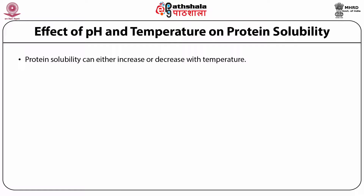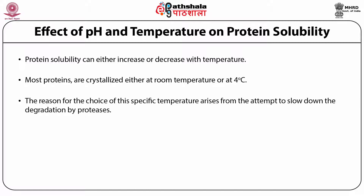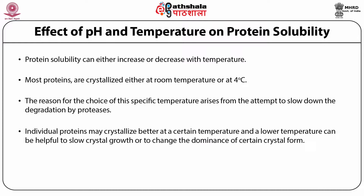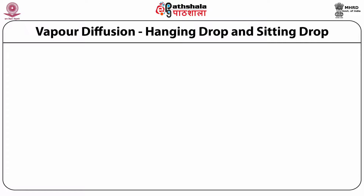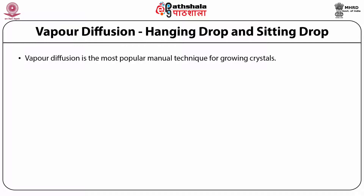The protein solubility can either increase or decrease with temperature. Most proteins are crystallized either at room temperature or at 4 degrees centigrade. The reason for this specific temperature choice arises from the attempt to slow down degradation by proteases. Individual proteins may crystallize better at a certain temperature, and a lower temperature can be helpful to slow crystal growth or to change the dominance of a certain crystal form. A reasonably constant temperature should be of advantage simply to keep stable whatever crystals may have formed.